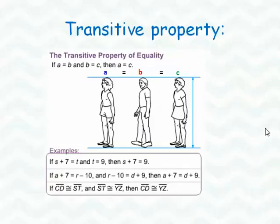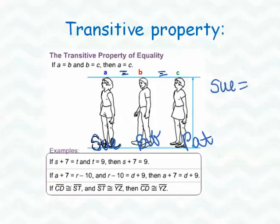The transitive property? The transitive property of equality basically says that if A is equal to B and B is equal to C, then A is equal to C. So let's take a look. With this example, let's say that this is Sue, Bob, and Pat. So what they're saying with this picture is if Sue's height is equal to Bob's height and Bob's height is equal to Pat's height, then we're able to conclude that Sue is equal to Pat.